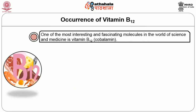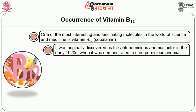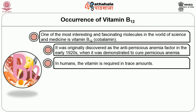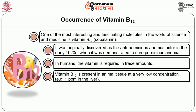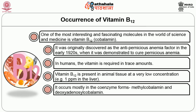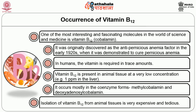Coming to the occurrence, one of the most interesting and fascinating molecules in the world of science and medicine is vitamin B12, called cobalamin. It was originally discovered as the anti-pernicious anemia factor in the early 1920s when it was demonstrated to cure pernicious anemia. In humans the vitamin is required in trace amounts and is present in animal tissue at a very low concentration, for example 1 ppm in the liver. It occurs mostly in the coenzyme forms methylcobalamin and deoxyadenosylcobalamin. Isolation of vitamin B12 from animal tissues is very expensive and tedious.